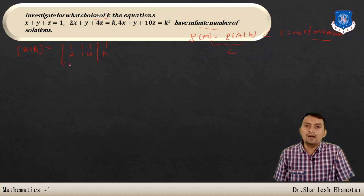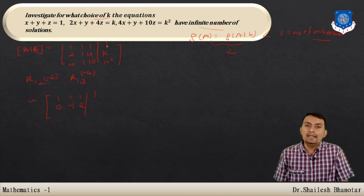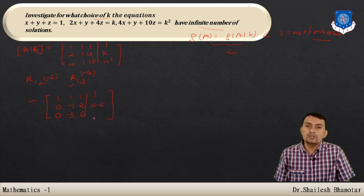Apply row operations: multiply row 1 by −2 and add to row 2; multiply row 1 by −4 and add to row 3. The equivalent matrix is: [1, 1, 1 | 1], [0, −1, 2 | k−2], [0, −3, 6 | k²−4].